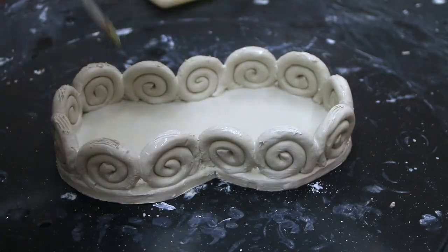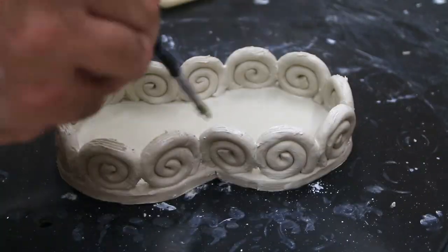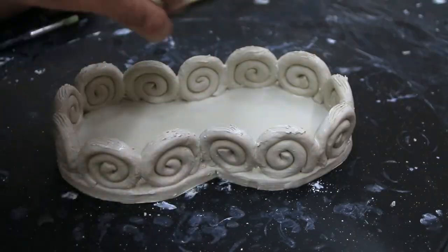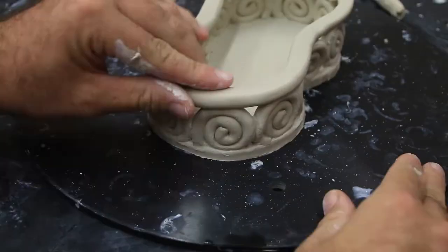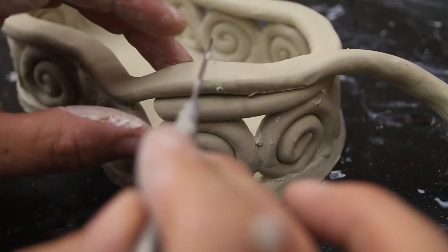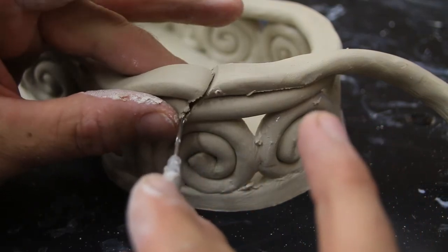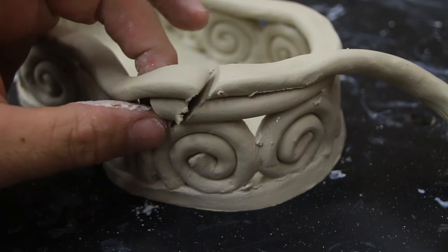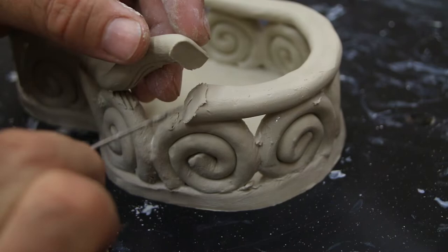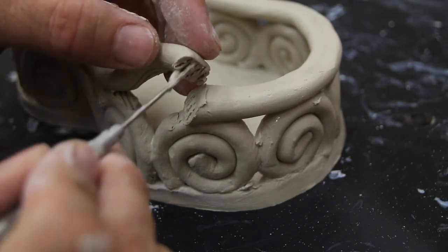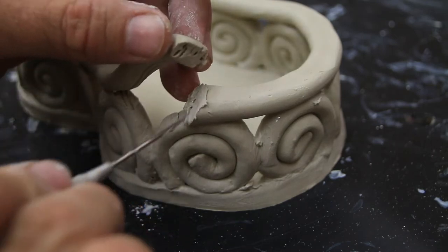If your stretcher row doesn't go all the way around or the coil is not long enough, it's very easy to attach two coils. You cut it a diagonal over an overlapping coil and then you score it and slip it and put it together. That diagonal creates a lot of surface area and makes a very strong joint and then you just blend it together and you'll never know it was two coils.